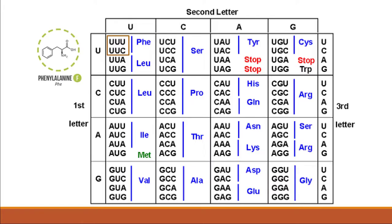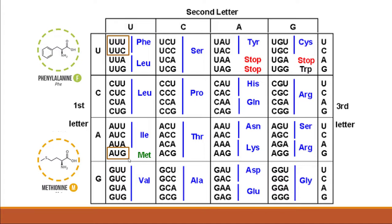For example, both UUU and UUC produce phenylalanine. All amino acids in the table are shown in blue, except methionine, which is in green. That's because AUG is the start codon for the translation machinery and codes for methionine, making it the first amino acid in most proteins. Other codes do not code for any amino acid — instead they signal the translation machinery to stop, and these are called stop codons.